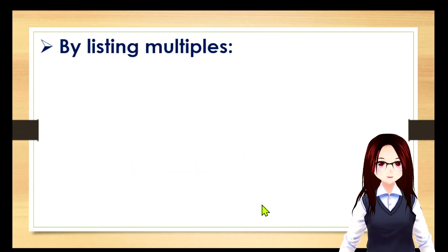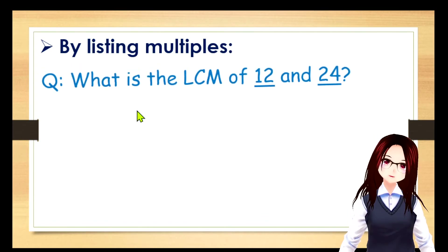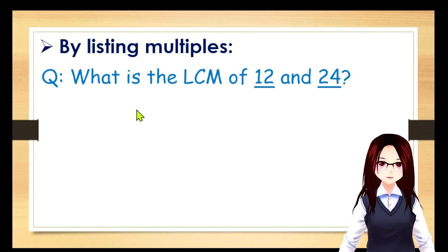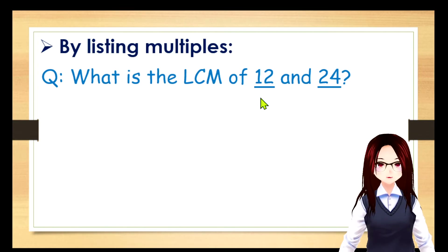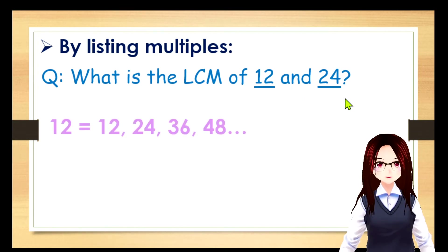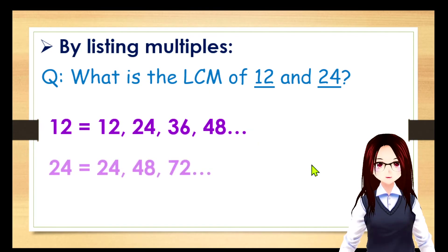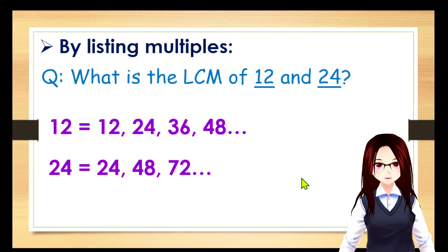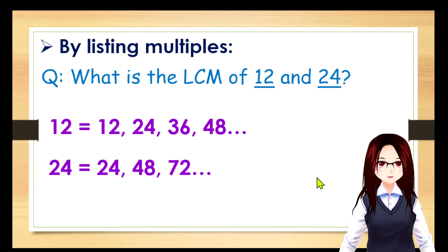Okay, next let's have another example by listing multiples. What is the LCM of 12 and 24? For 12, you have your multiples here, and for 24, you also have your multiples. It's obvious here that our least common multiple is 24.